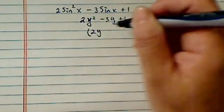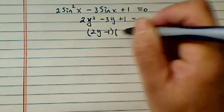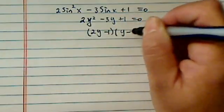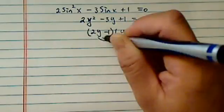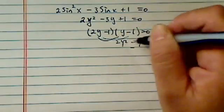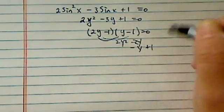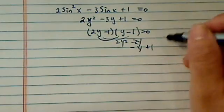This one factors to be 2y minus 1, and then I have a y minus 1 here as well. So let's make sure I got it. So 2y squared minus y, and then I have 2y squared minus 2y minus y plus 1. So I have 2y squared minus 3y plus 1. Okay, so this one fits out.